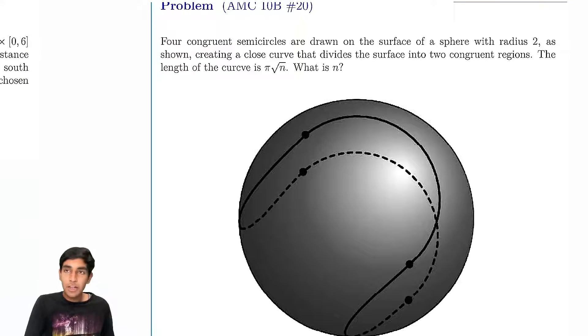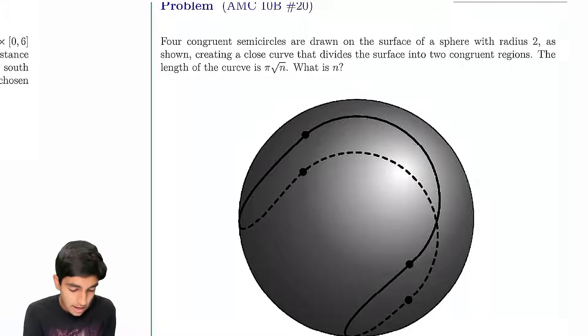Let's now tackle this tricky sphere problem from the AMC-10b. Four congruent semicircles are drawn on the surface of a sphere with radius 2, as shown, creating a closed curve that divides the surface into two congruent regions. We're asked to find the length of the curve.